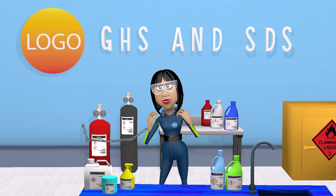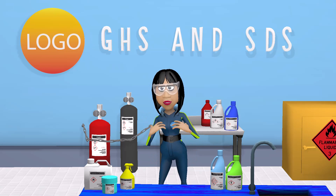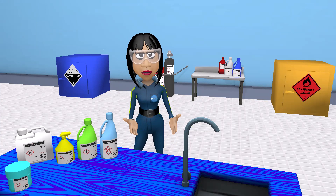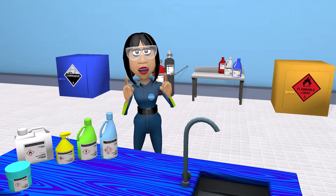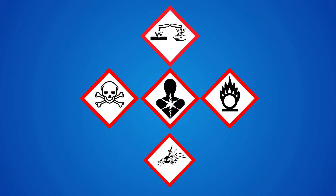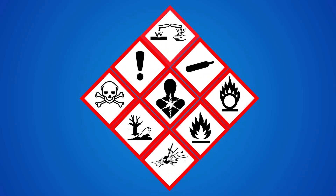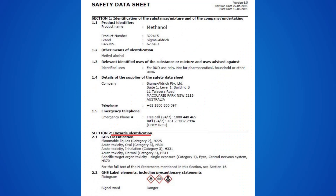Welcome to our presentation on chemical hazards, GHS, and the SDS. The Globally Harmonized System, or GHS, makes identifying hazardous materials relatively simple using nine standardized symbols on all labels and documents, providing a worldwide approach to classifying chemicals. The GHS symbol that should be used is indicated in section 2 of the manufacturer's SDS.